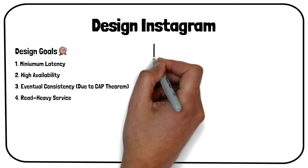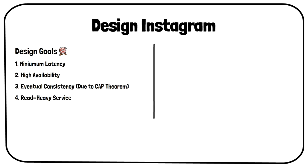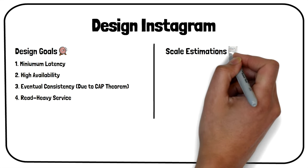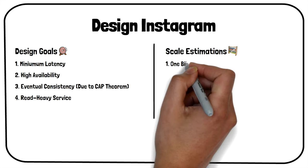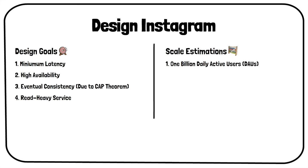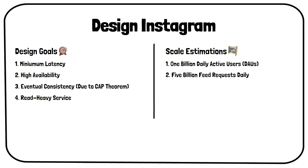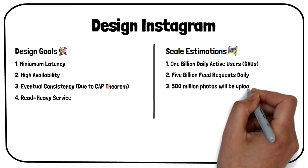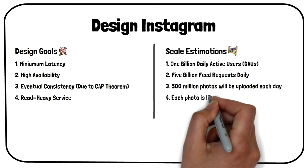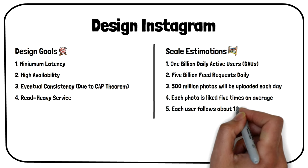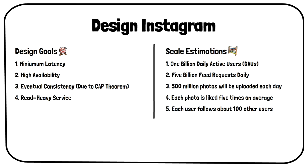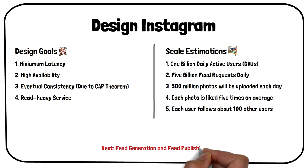To design an efficient system in the interview, we will have to consider the following scale estimations. On average, the system will have 1 billion daily active users, with each user fetching their feed 5 times a day. Thus, the system will receive around 5 billion feed requests daily. Also, about 500 million photos are uploaded each day, each photo is liked 5 times on average, and each user follows about 100 other users. As this question is very similar to designing Facebook news feed, this problem will again be divided into two parts: feed generation and feed publishing.